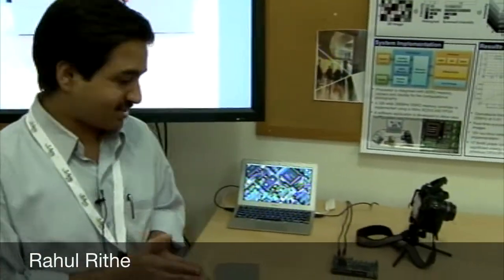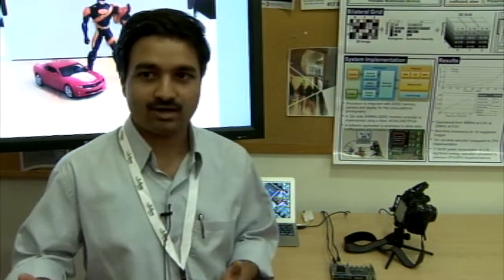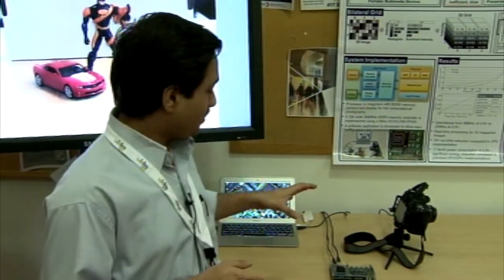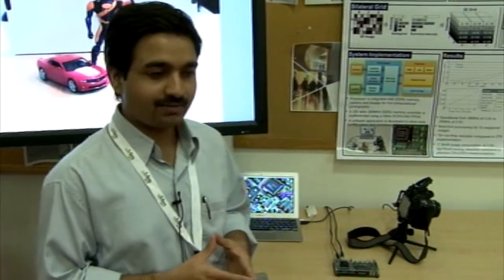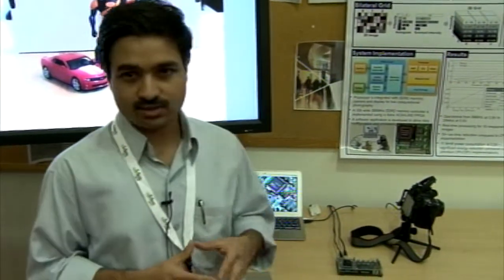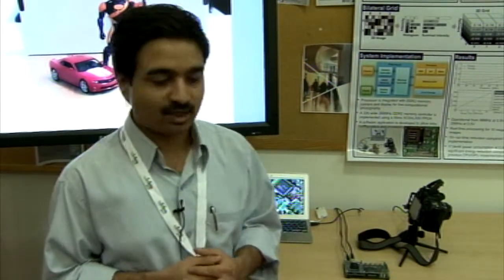Here we have a computational photography processor. Computational photography is now coming in mobile devices through applications such as high dynamic range imaging, low light enhancement, panoramas, and so on. We have built a hardware implementation for computational photography. It has two key advantages over doing the same processing in software — for example, on a mobile processor or in a camera processor: you can achieve real-time performance, as well as very high energy efficiency compared to software implementation on mobile processors.